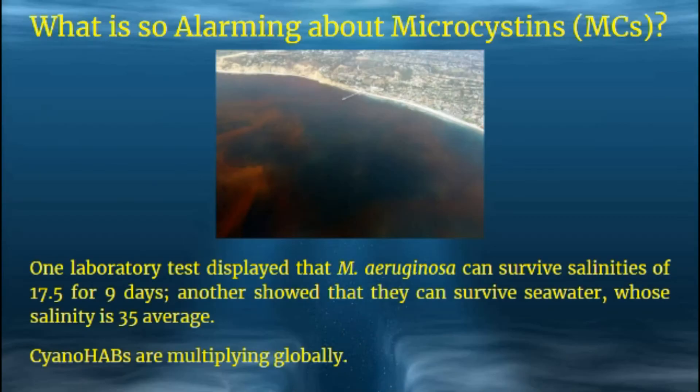One laboratory test displayed that cyanobacteria can survive salinities of a maximum of 17.5 for nine days, and only one study showed that they can survive seawater whose salinity averages 35. CyanoHABs have proliferated freshwater systems globally in recent decades in both frequency and intensity. Since HABs can compromise public health and damage ecosystems, it is of utmost importance to understand their cause and to prevent them from occurring.